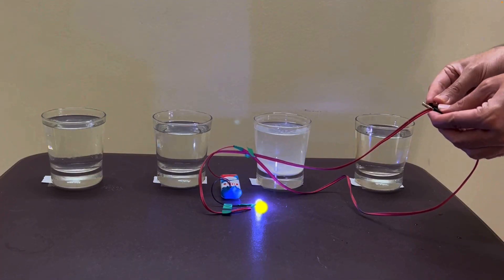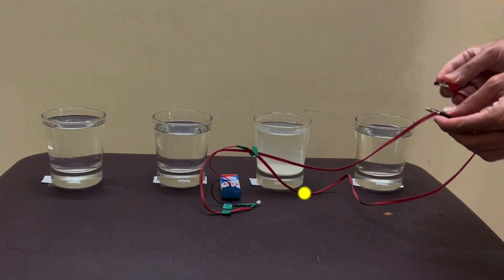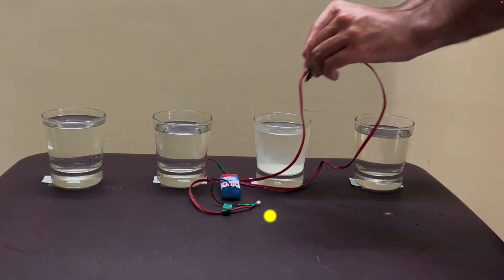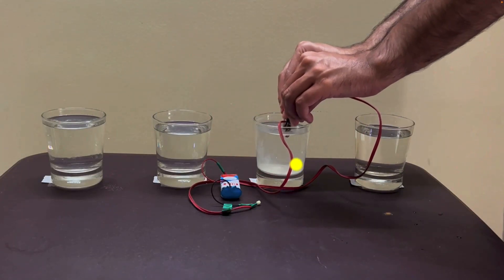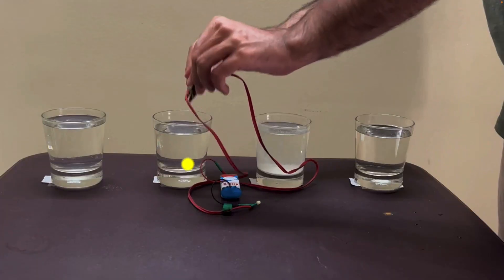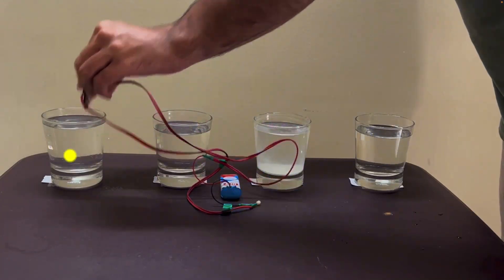First of all, the bulb glows so we can actually see that this thing works. And now if I insert it in the first one, nothing happens. I insert it in the second one, which is some kind of a mixture, nothing happens. I insert it in the third one, which is a clear liquid, we get a glow, and in the fourth one, we get an even bigger glow.